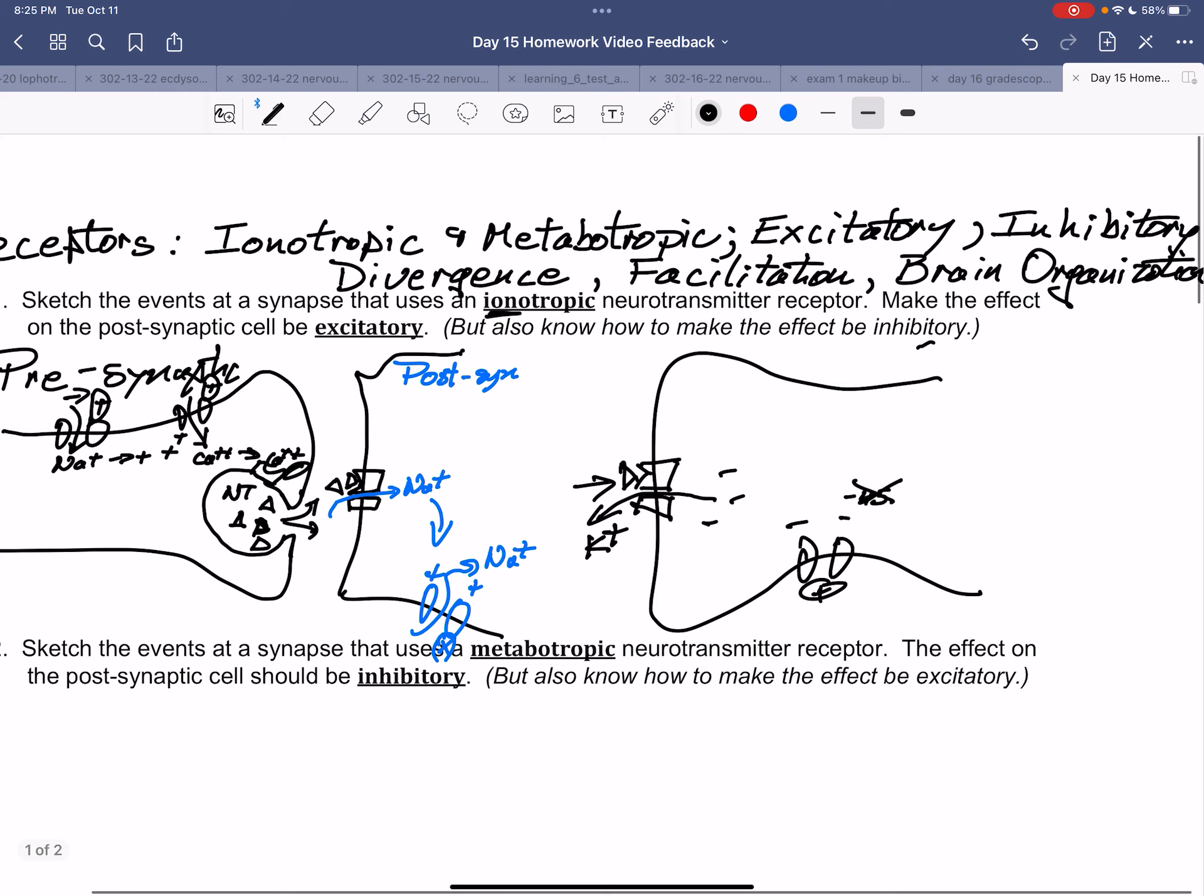We could instead have made our receptor be a chloride channel. And in most, but not quite all cells, the equilibrium for chloride is such that it enters. Again, it'll make the cell more negative.